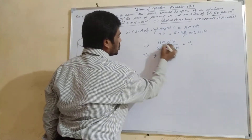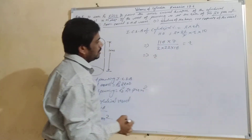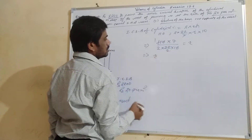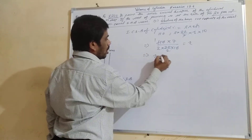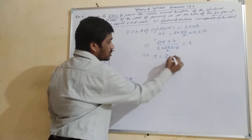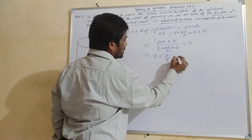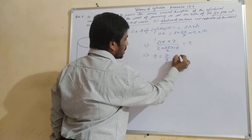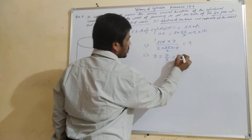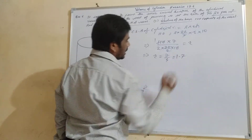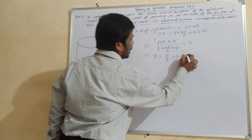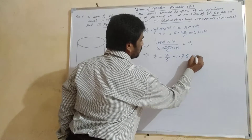Simplifying: the zeros cancel, giving R = (11 × 7) / (2 × 22). Then 22 divided by 11 gives 2, and 7 divided by 4 gives 1.75. So R = 7/4 = 1.75 meters.